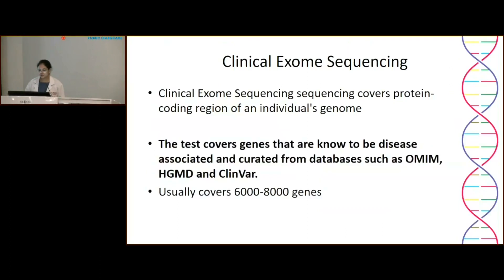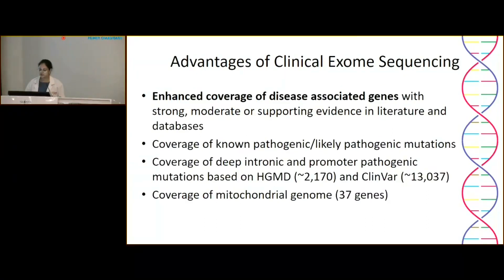We often come across the term clinical exome sequencing, which is not actually full exome sequencing. It does cover the protein-coding region but only includes genes reported to be associated with diseases in databases such as OMIM, HGMD, and ClinVar, generally covering 6,000 to 8,000 genes. Advantages include enhanced coverage of disease-associated genes, mainly pathogenic and likely pathogenic variants, deep intronic and promoter pathogenic mutations based on HGMD and ClinVar, and also coverage of the mitochondrial genome.